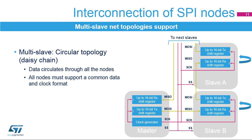Another multi-slave configuration is the circular topology, where the inputs and outputs of all the nodes are connected together in a closed serial chain. A common slave select signal is used for all nodes, as communication occurs at the same time. All nodes must have the same data and clock format configuration. When the slave SPI nodes are provided by microcontrollers, the internal transmit and receive shift registers are usually physically separated, so the data transferred between them has to be handled by software in this circular mode, while the master node has to provide sufficient time between data to compensate for these internal transfers.